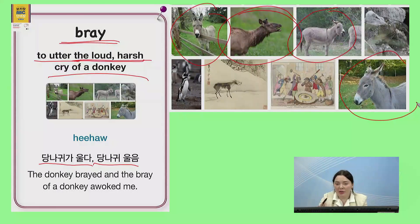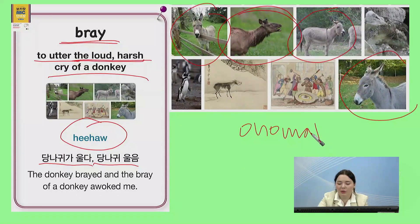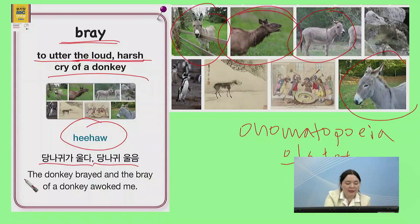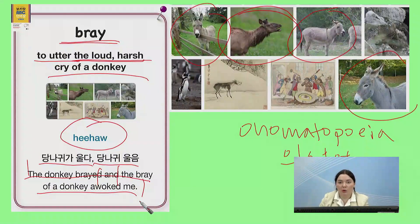In English, we have another word for bray, which is 히허, 히허. That is 의성어 for what a donkey says — that is onomatopoeia. 의성어. So you could say, the donkey brayed and the bray of a donkey awoke me. 당나귀가 울었고, the donkey brayed, 당나귀 울음소리가 나를 깨웠다. And the bray of a donkey awoke me.